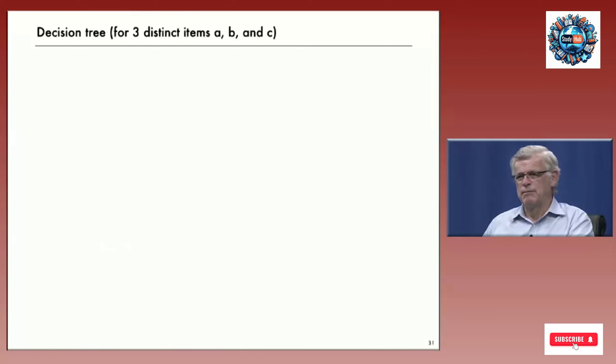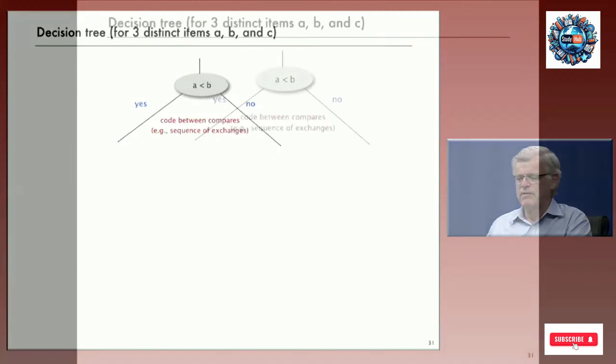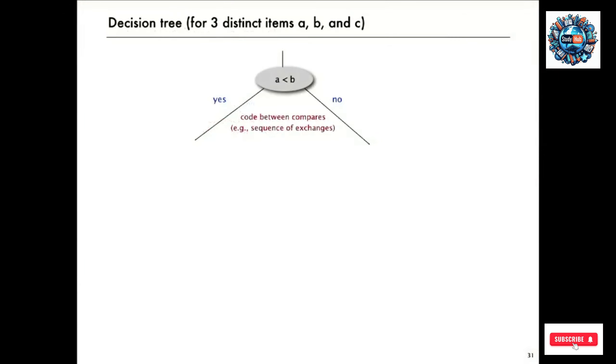So, here's the basic idea for proving a lower bound for sorting. Let's say we have three different items, A, B, and C. Whatever algorithm we have is going to first do a comparison between two of the items. Let's say they're A and B. And then there's two cases. Either it's yes or it's not yes. Let's say they're distinct. And there'll be some code between the compares. But either way, then there's going to be a different compare.